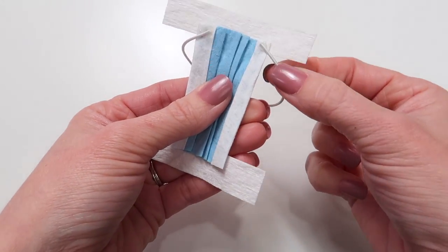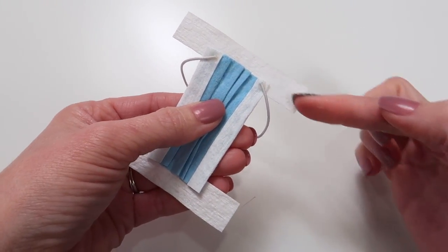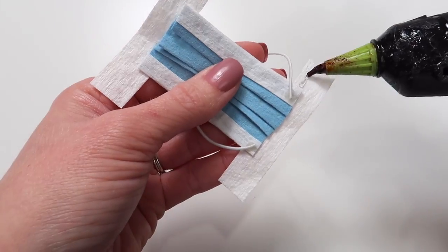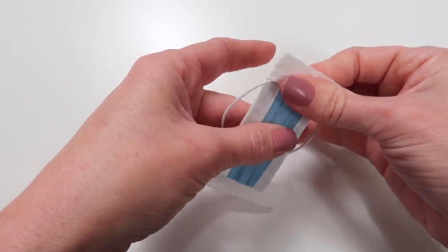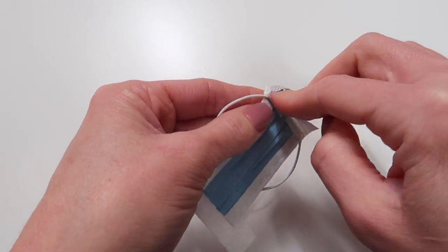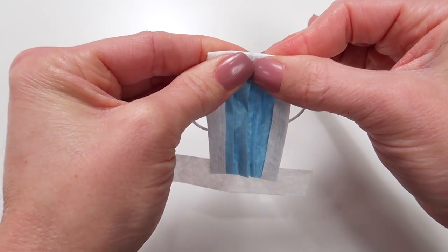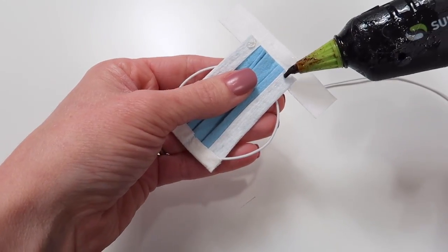Now we're going to close the sides. Just press it together until the hot glue has dried, and repeat on this side, starting with the two glue dots and your elastic.